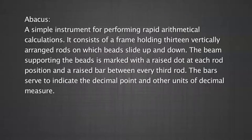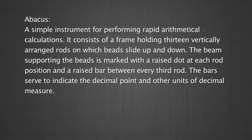Tailor arithmetic frame and arithmetic and algebra type: The surface of this aluminium frame is divided into star-shaped holes with eight angles, thus allowing the double-ended metal types to be placed in different positions according to a set system. Abacus: A simple instrument for performing rapid arithmetic calculations. It consists of a frame holding thirteen vertically arranged rods on which beads slide up and down. The beam supporting the beads is marked with a raised dot at each rod position and a raised bar between every third rod, serving to indicate the decimal point and other units of decimal measure.